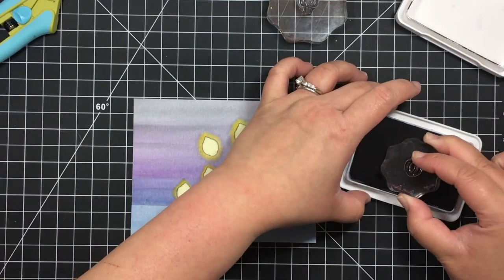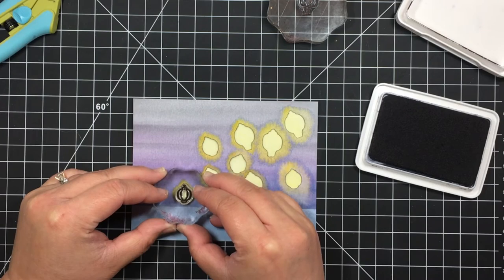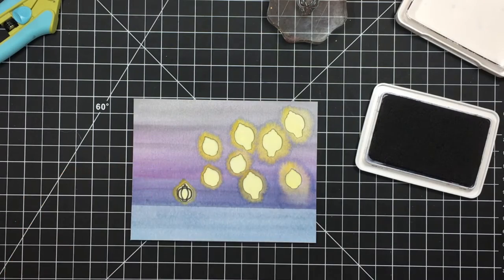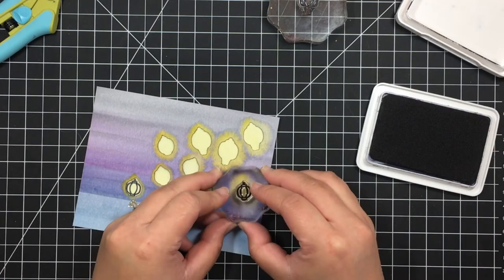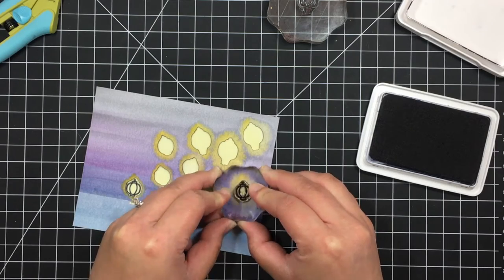Next I stamp my lanterns onto the vellum with Ranger archival black ink. Giving myself that tiny border with the scan and cut also gives me a little room for error when lining up my stamps.